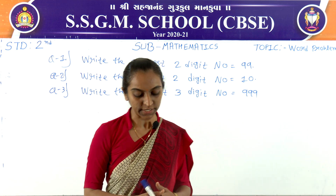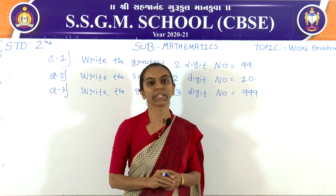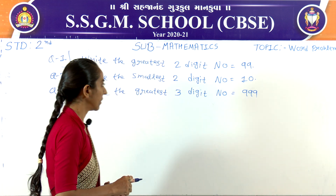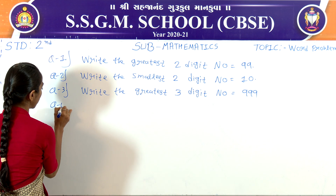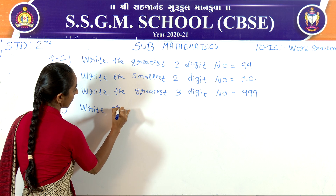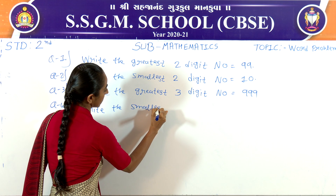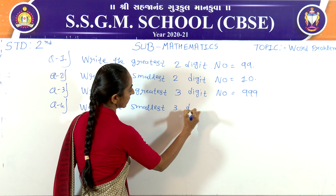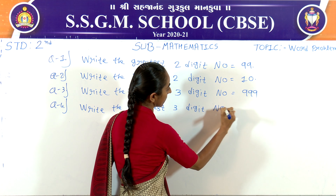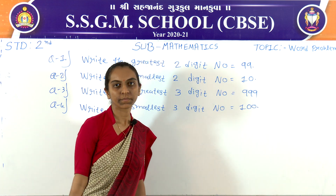Question 4: what is the smallest number of three digits? You know that the smallest number of three digits is 100. Write the smallest three-digit number. The answer is 100.